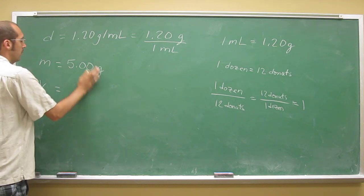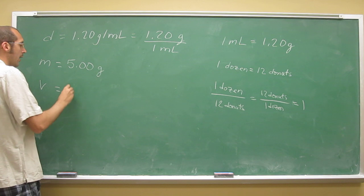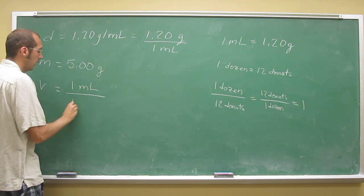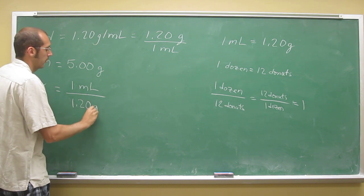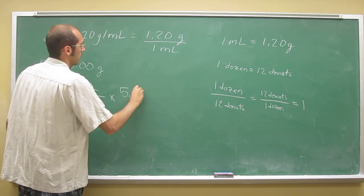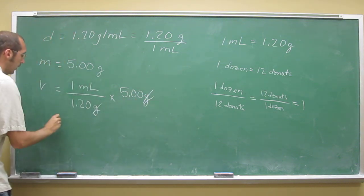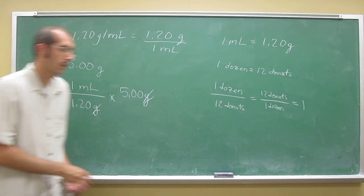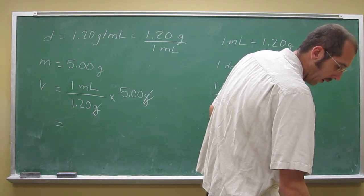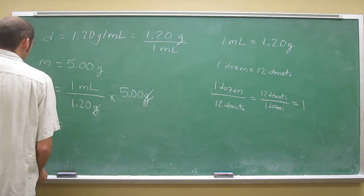Well, in order to find the volume, volume we know is units of milliliters, so we want to have those on top. So if we just flip this over, 1 mil over 1.20 grams, multiply that by 5.00 grams, cancel out grams, so then we just get our calculator out and say 5 divided by 1.2 equals 4.16666666.